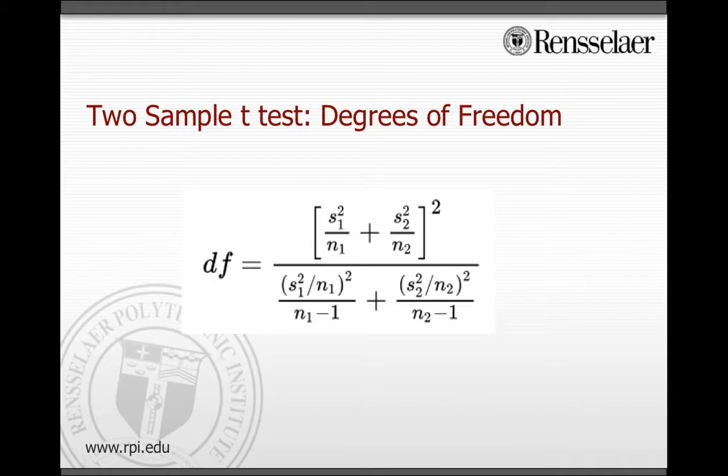And while this looks complicated, it's really just plug and chug. You can see you're using the sample variances that you've already calculated for the test statistic and the sample sizes. So once you find those numbers, it's really just plug and chug. And you'll note if you get a decimal here, you'll round down to the nearest integer. And after that, you should be able to find your rejection region or regions, depending on your alternate hypothesis, and proceed as normal.